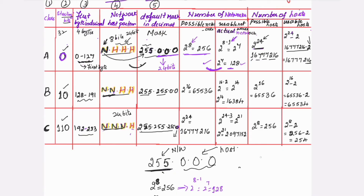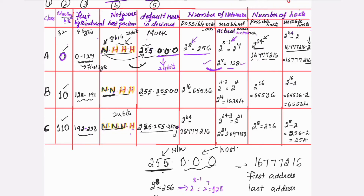These 2 addresses are removed because in any network the first address is given to the network only, so the first address is reserved. And the last address is called the broadcast address. So these 2 addresses should not be assigned to any host. For that reason, from whatever are the possible hosts, you subtract 2 to get the actual usable host addresses.